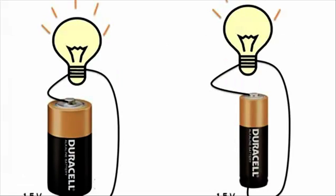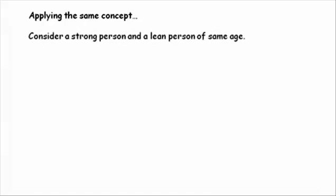Now everything seems to be all right, but after some time period the bulb connected to the smaller size battery stops glowing while the other bulb continues to glow. To understand why this happens, let us apply the above concept to two people of same age but one strong and the other lean.